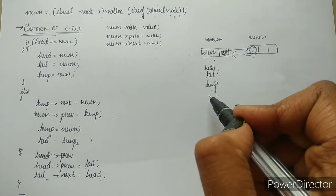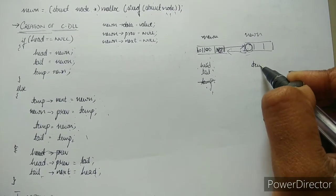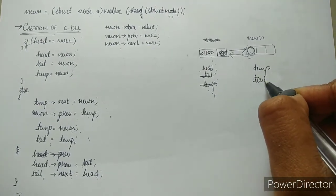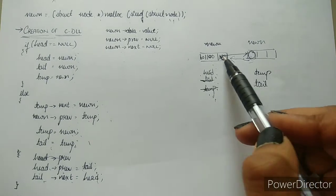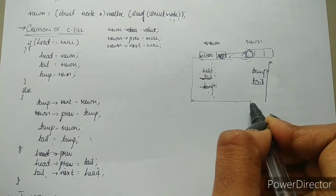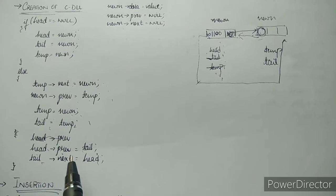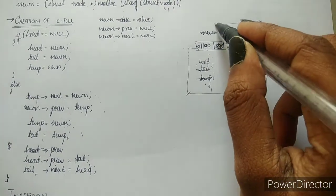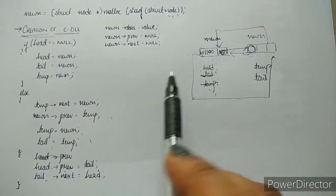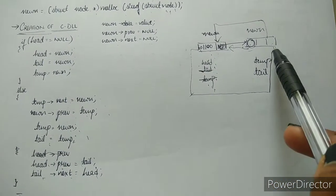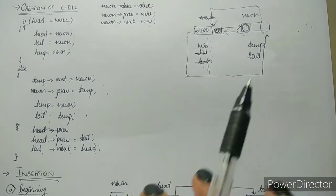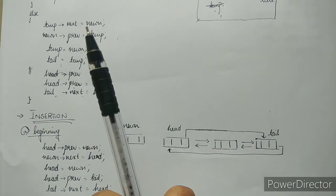Now temporary is new node — this second node becomes temp. And tail is equal to temp, so the second node is tail. Head's previous is tail, so head's previous field points to tail. And tail's next points to head. In the second iteration you have two nodes forming the circular structure. If you have more nodes they are placed adjoining the temporary node, and the last node is called tail. That's it for creation of the circular doubly linked list.